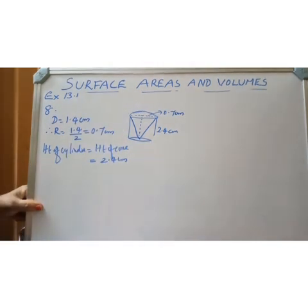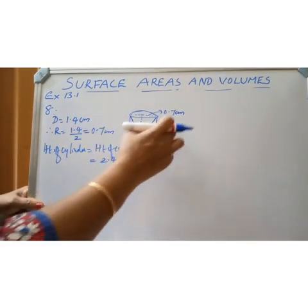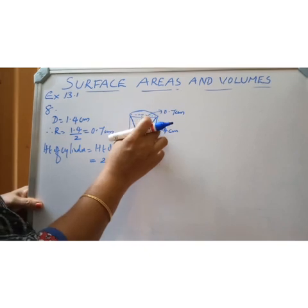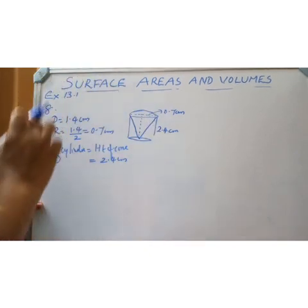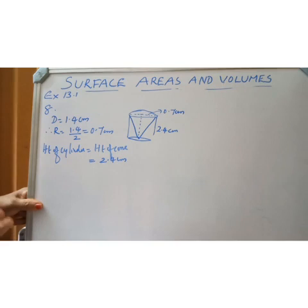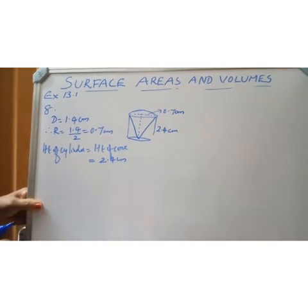For finding the total surface area of the given shape, we have to find out CSA of the cylinder plus CSA of the cone plus base area. Adding these three areas will give us the TSA of the remaining solid.